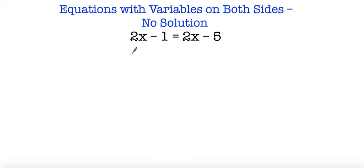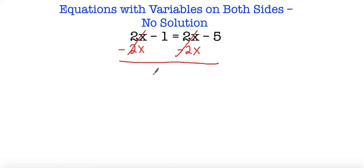Same thing here. I have 2x minus 1 is equal to 2x minus 5. If I subtract 2x from both sides to move my variables, this cancels out and this cancels out. I'm left with negative 1 is equal to negative 5, and we know that negative 1 is not equal to negative 5. So again, we have no solution.